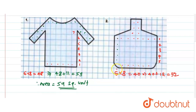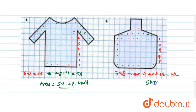Now we calculate the partial squares. This one and this one is 1; this one and this one is 2; this one and this one is 3; and these two become 4. So partials are 4. Therefore, total squares are 52 plus 4, which equals 56 square units. That is the total area of this second figure.